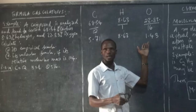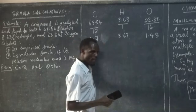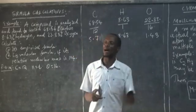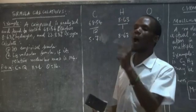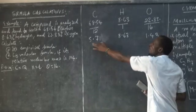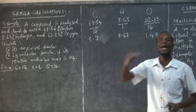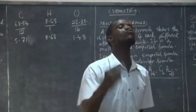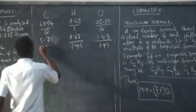Now you have to look for the smallest number among these three numbers: 5.71, 8.63, and 1.43. We are looking for the smallest — that is a superlative, meaning we are comparing one out of the group. The smallest from these three numbers is 1.43. Now you divide all values by the smallest number: divide 5.71 by 1.43, divide 8.63 by 1.43, and divide 1.43 by 1.43.